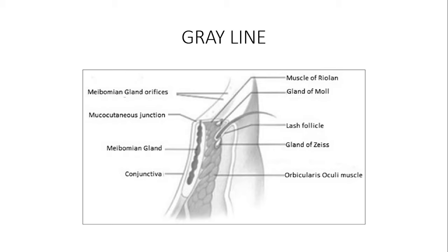Let me remind you of a little anatomy. Within the tarsal plate in the eyelid, you have the gland called the meibomian gland, and it has its own orifice. It is found posterior to the gray line. The meibomian gland discharges its lipids to form the precorneal tear film — specifically the lipid layer — to retard evaporation of tears. At the root of the eyelash you have two major glands: the gland of Zeis and the gland of Moll, which are anterior to the gray line.